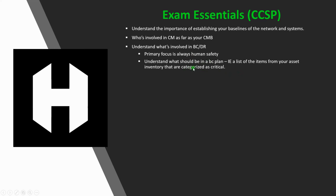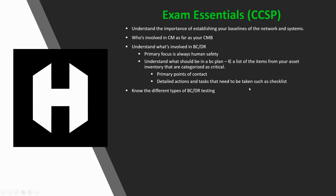Understand what should be in a business continuity plan — for example, a list of items from your asset inventory that are categorized as critical, your primary points of contact, and detailed actions and tasks that need to be taken, such as checklists. Also know the different types of business continuity and disaster recovery testing. Your tests can include tabletop testing, dry runs, as well as full tests.